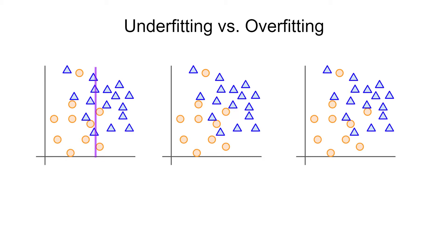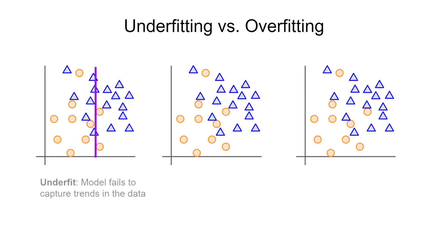Let's train a very simple machine learning model on this data. This model is basically a simple threshold for one of the dimensions. Anything less than that threshold belongs to the circle class and anything greater than that threshold belongs to the triangle class. It's incredibly simple, it's fast, and it might work in some cases. However, it's not very accurate as you can see. In this case, we would say that the model is underfit — it fails to capture any of the grouping or trends in the data.